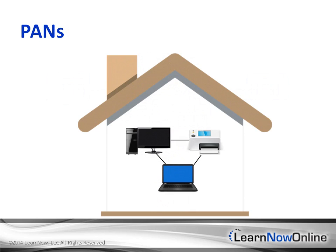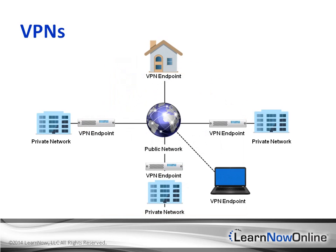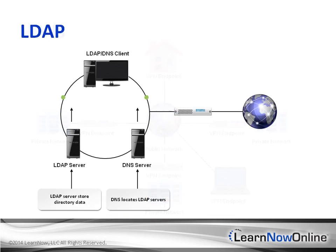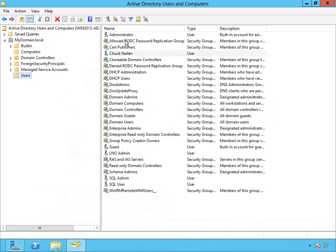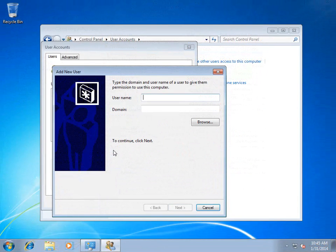Then you will learn about different types of networks: workgroup, homegroup, and domains. For domains, we will cover how to add a user to the domain, as well as pre-staging a computer that is going to be added to the domain.